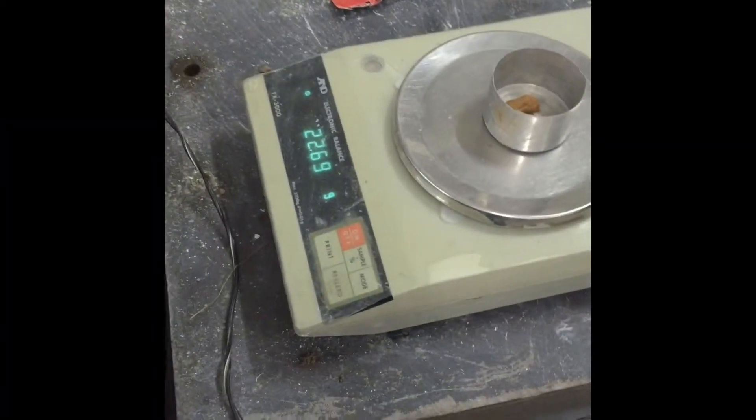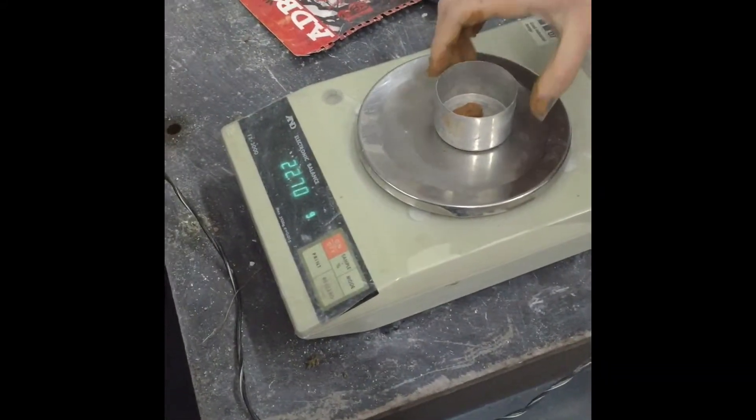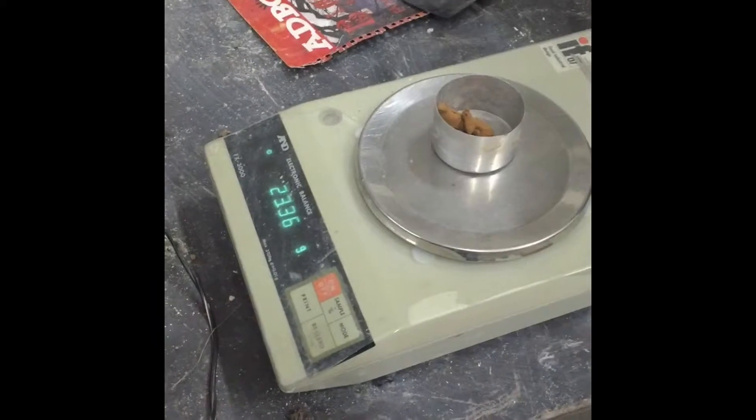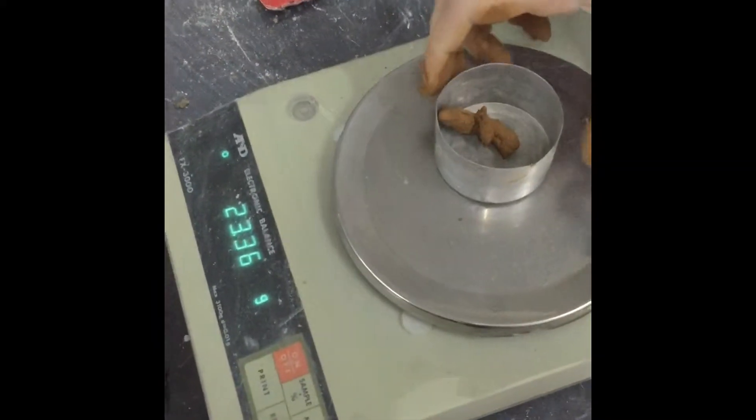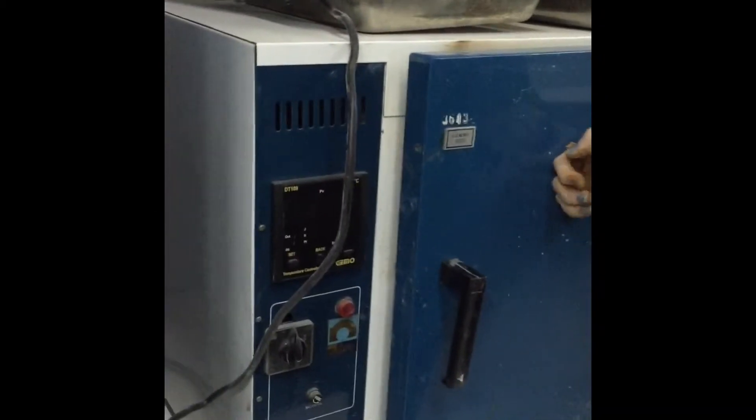Now we measure the weight of the wet soil and also we measure the water content of the wet soil. Now we put it into the oven and dry the soil. After we dry we measure the second weight and the moisture content and the average of 2 moisture contents is our plastic limit. Now we put it into the oven and dry it.